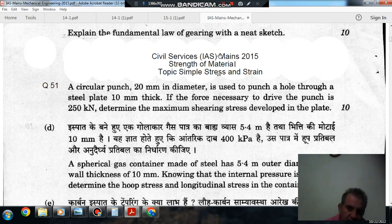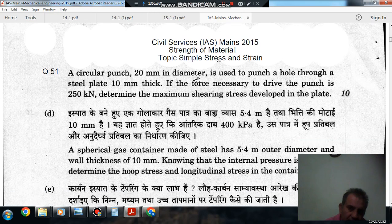Question number 51 from Civil Services Mains 2015 is: A circular punch 20 mm in diameter is used to punch a hole through a steel plate, 10 mm thick.